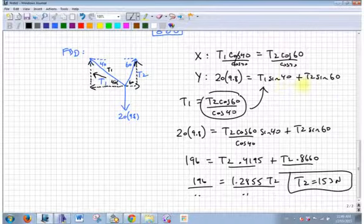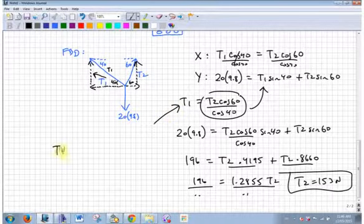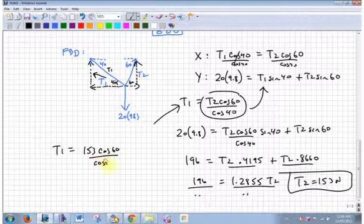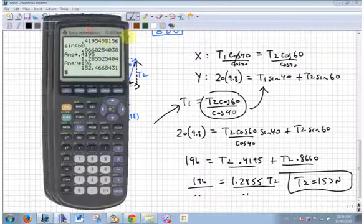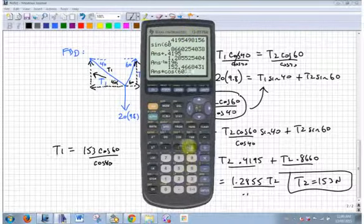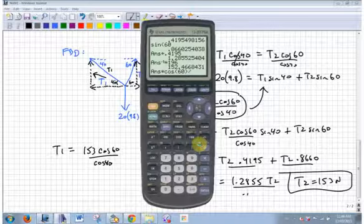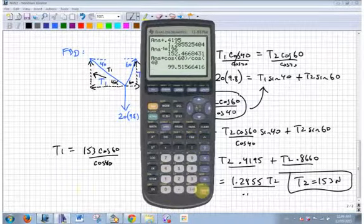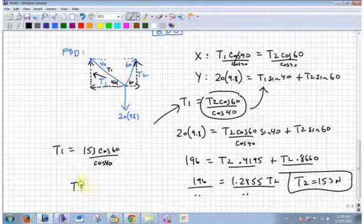Now, what do you do to find T1? Yeah, you can put it here if you want, but I think that one would be nicest. T1 is 153 cos 60 over cos 40. Times 1.5 divided by whatever cos 40 is. 99. Let's call it 100. Okay. Equilibrium.